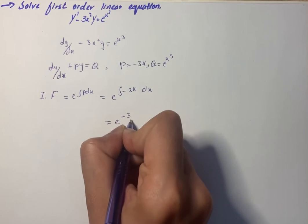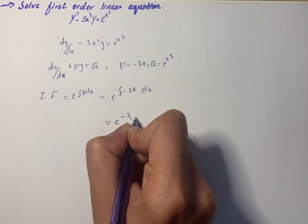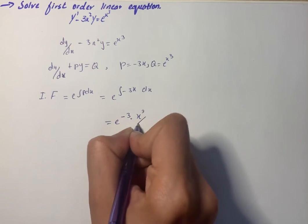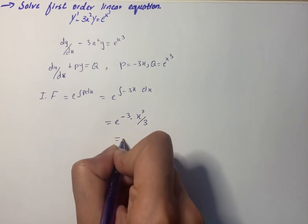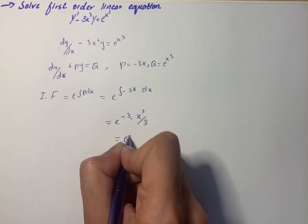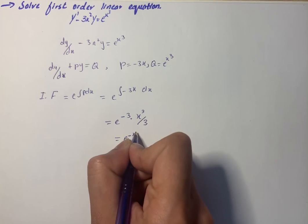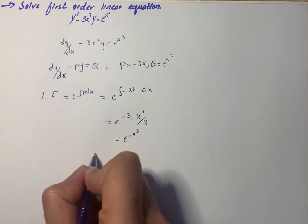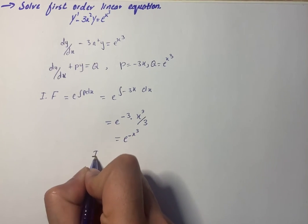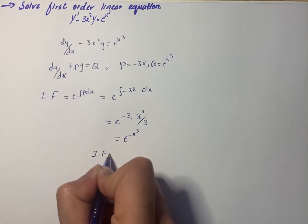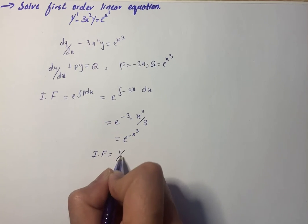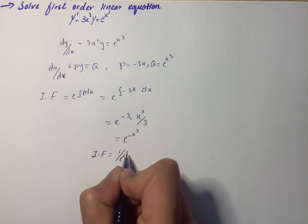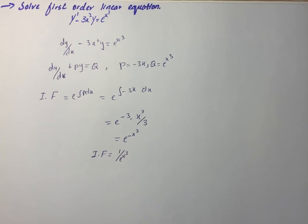On further simplification, this gives e raised to the power of minus 3 times x cubed over 3, which equals e raised to the power of minus x cubed. So the integrating factor is 1 over e^(x cubed).